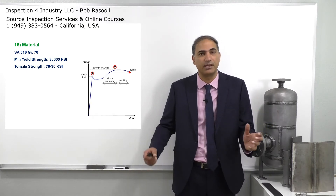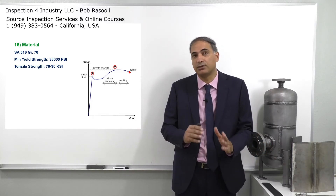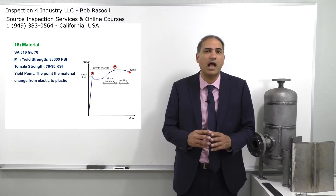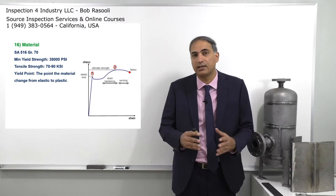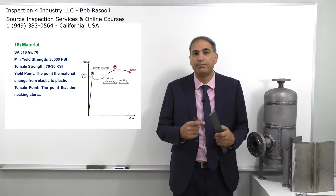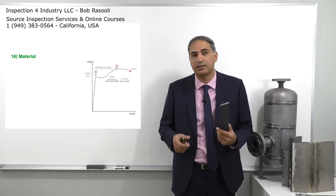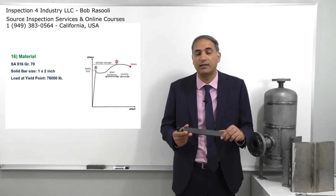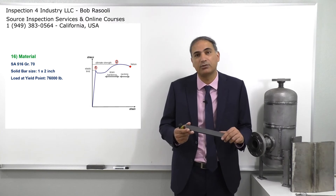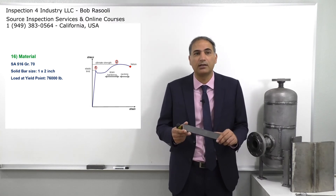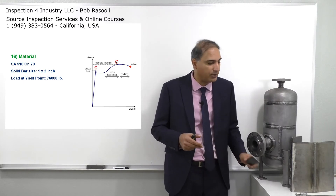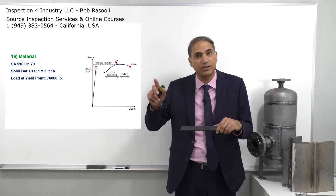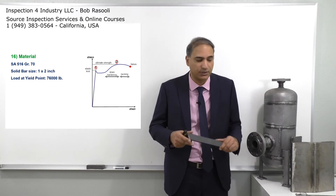Now let's see how the machine calculates yield strength and tensile strength using the same stress-strain curve for SA516 Grade 70. Consider a two-inch by one-inch solid bar. To measure yield strength, I place this in a tensile machine. The machine pulls until point one is reached — the elastic-to-plastic transformation, the yield point. At that point, I'm going to indicate a load of sixty thousand pounds is applied.